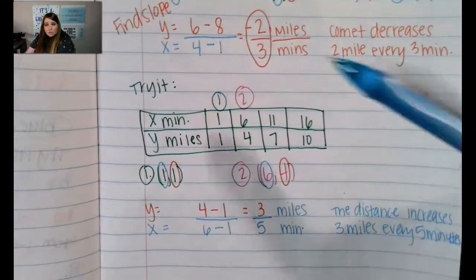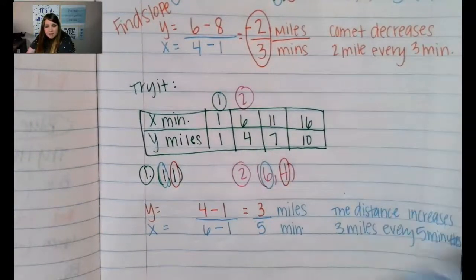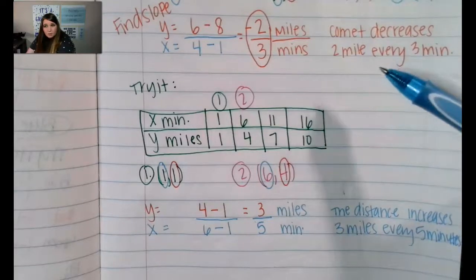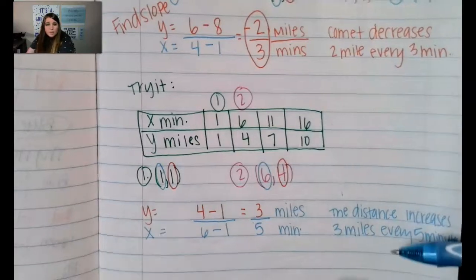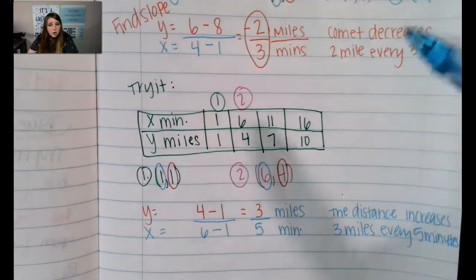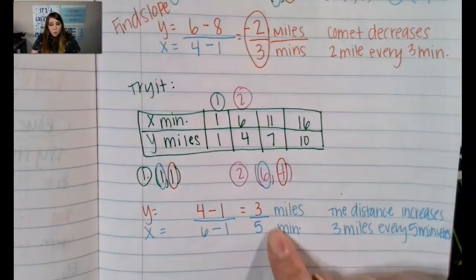How far is your distance? Miles and minutes. You just use those words to talk about what's happening. How did you do on finding the slope? How did you do on creating ordered pairs? And how did you do on reading what the slope means?